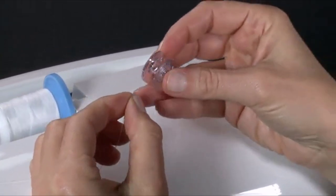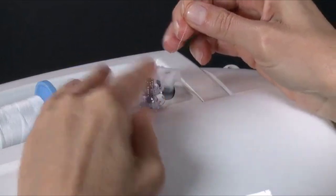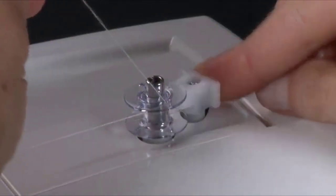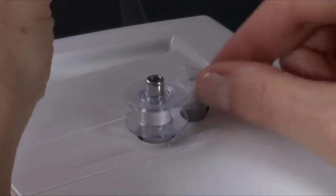Pull the end of the thread through the hole in the bobbin. Place the bobbin onto the bobbin winder as far down as it can go, with the end of the thread coming from the top of the bobbin. Hold onto the end of the thread, then push the bobbin winder lever against the bobbin until it clicks and the bobbin begins to rotate.